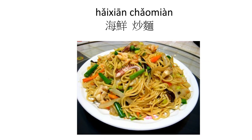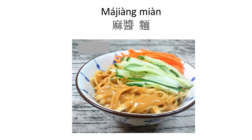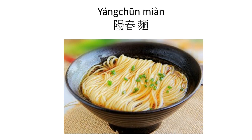海鮮炒麵 — 海鮮 is seafood, 炒麵 is stir-fried noodle, so it's stir-fried seafood noodle. 麻醬麵 — you can often find this in dumpling shops. 麻醬 is sesame sauce and 麵 is noodle. 陽春麵 is just plain noodle soup.